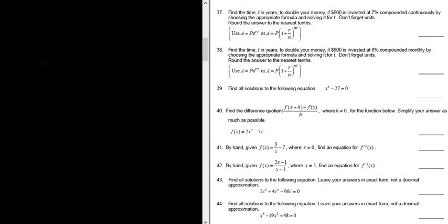Problem number 38. Find the time t in years to double your money if $600 is invested at 8% compounded monthly by choosing the appropriate formula.